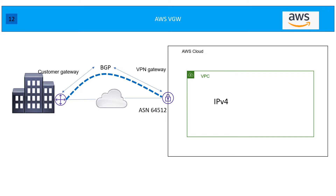For route-based tunnels you can run a dynamic protocol — for example, BGP. This is my customer gateway and this is my VPN gateway. You should have an ASN number, and while configuring the VGW, AWS will ask whether you want to define an ASN number or go for the default. The default is going to be 64512, which comes from the private ASN range.